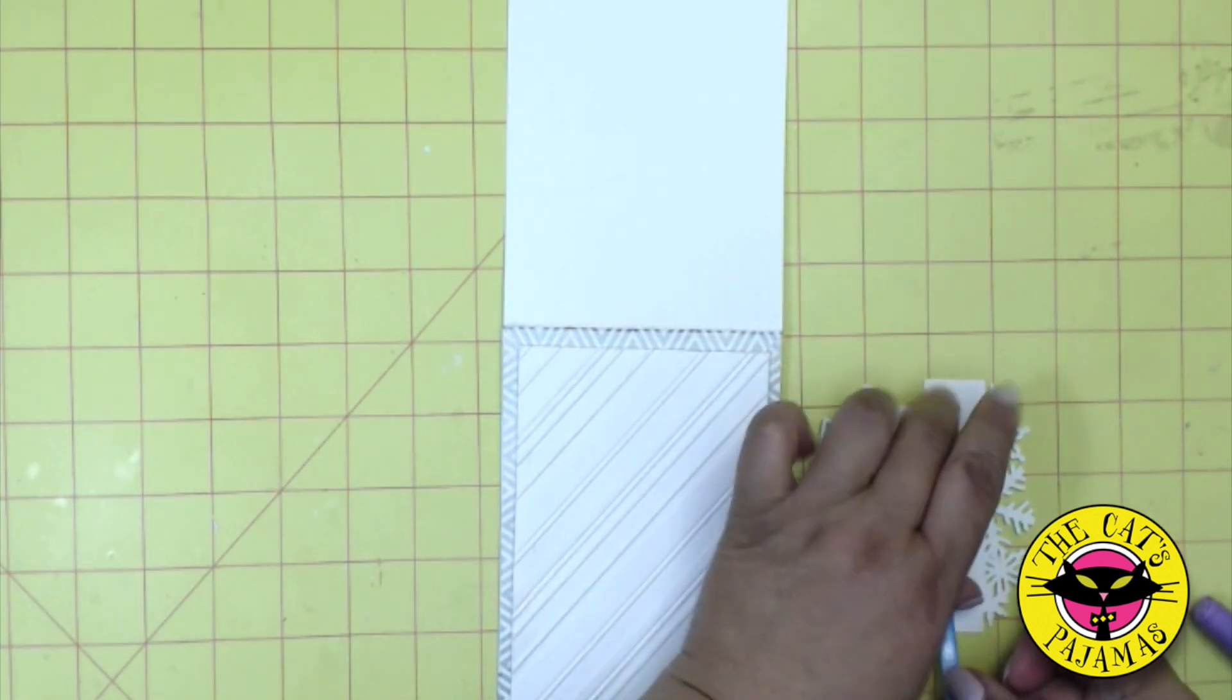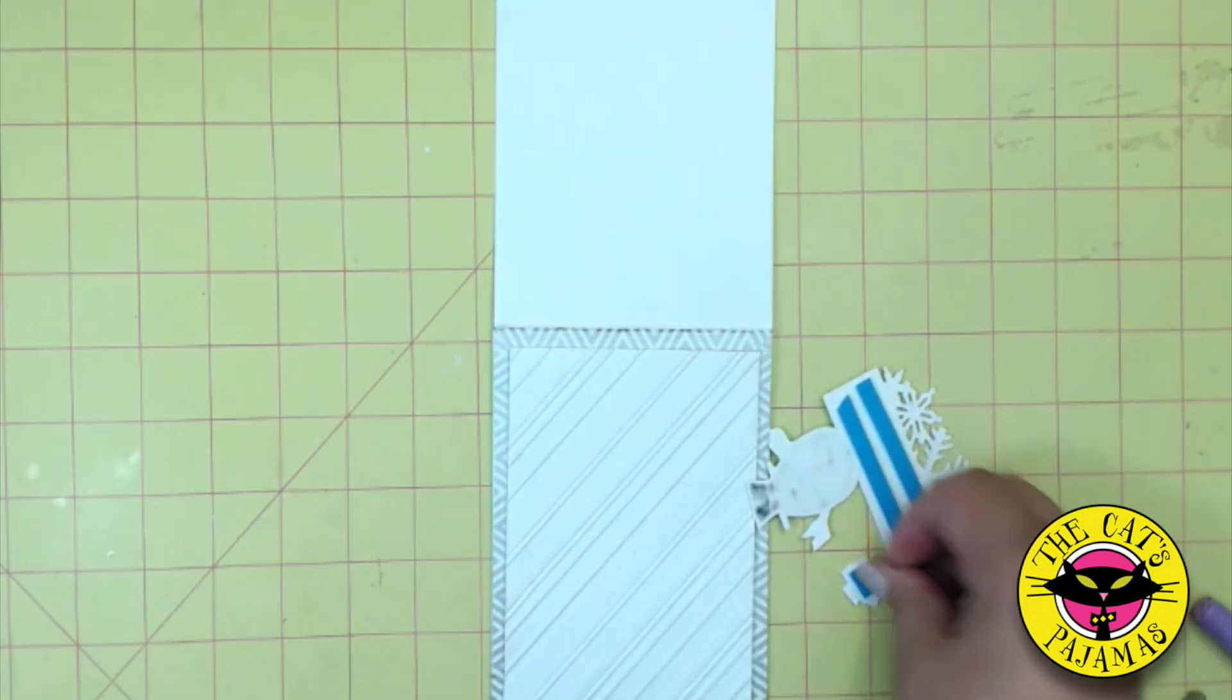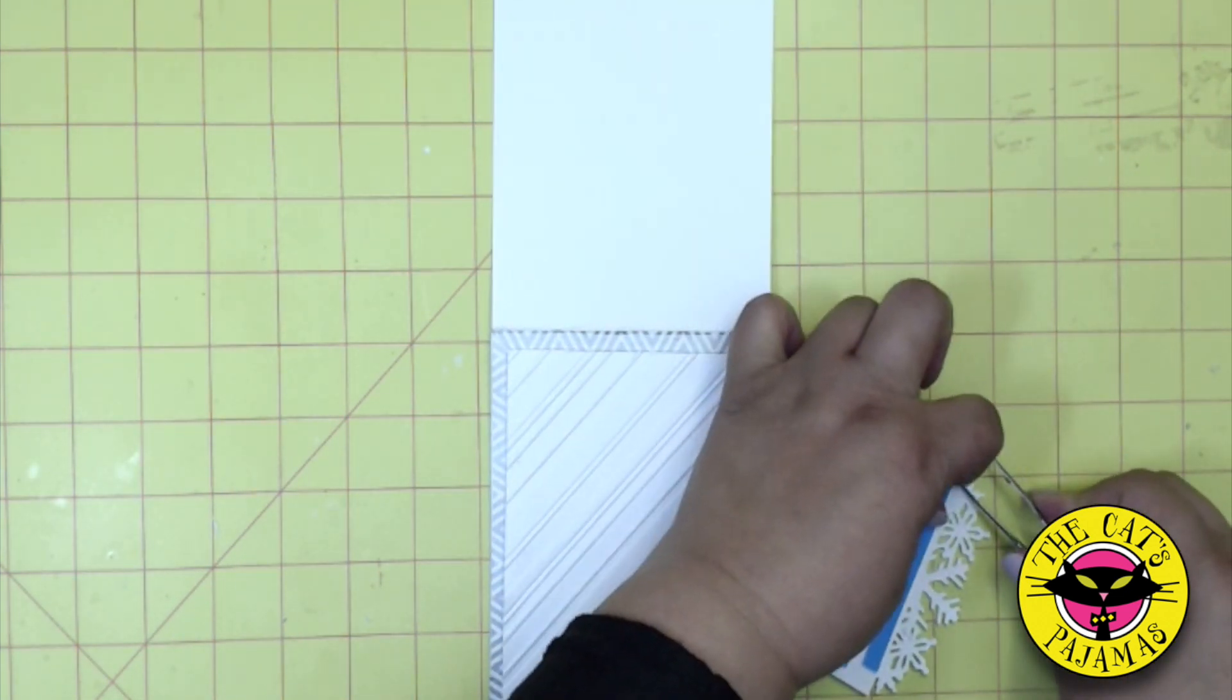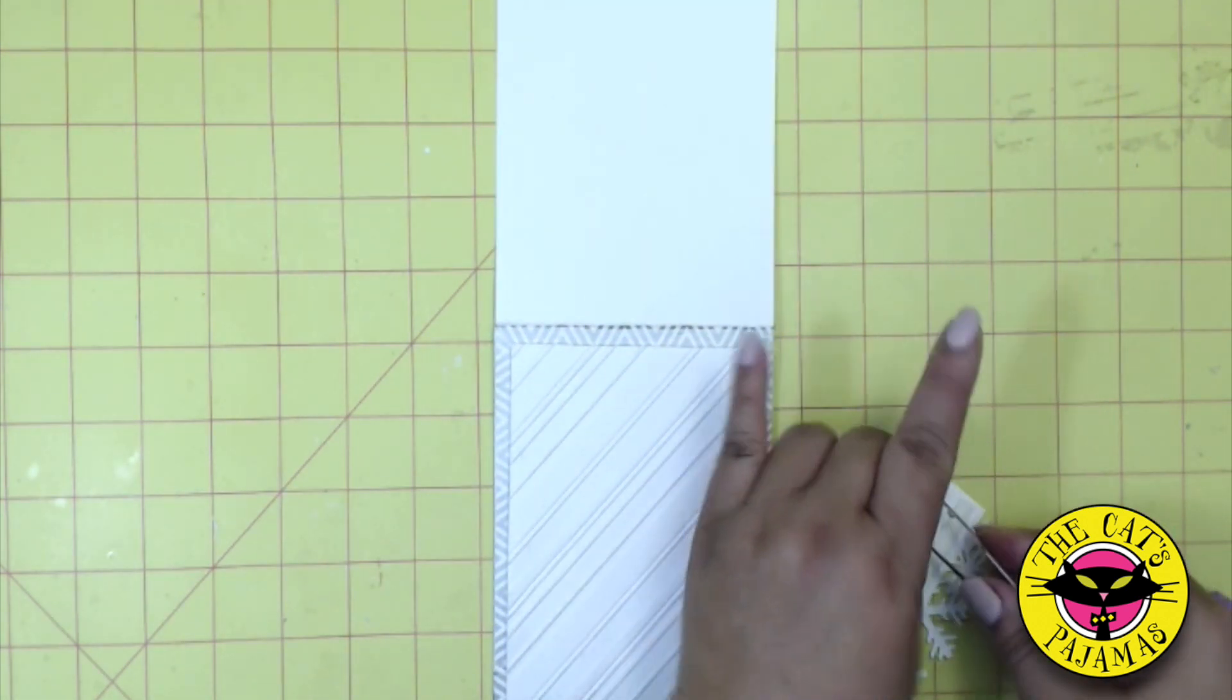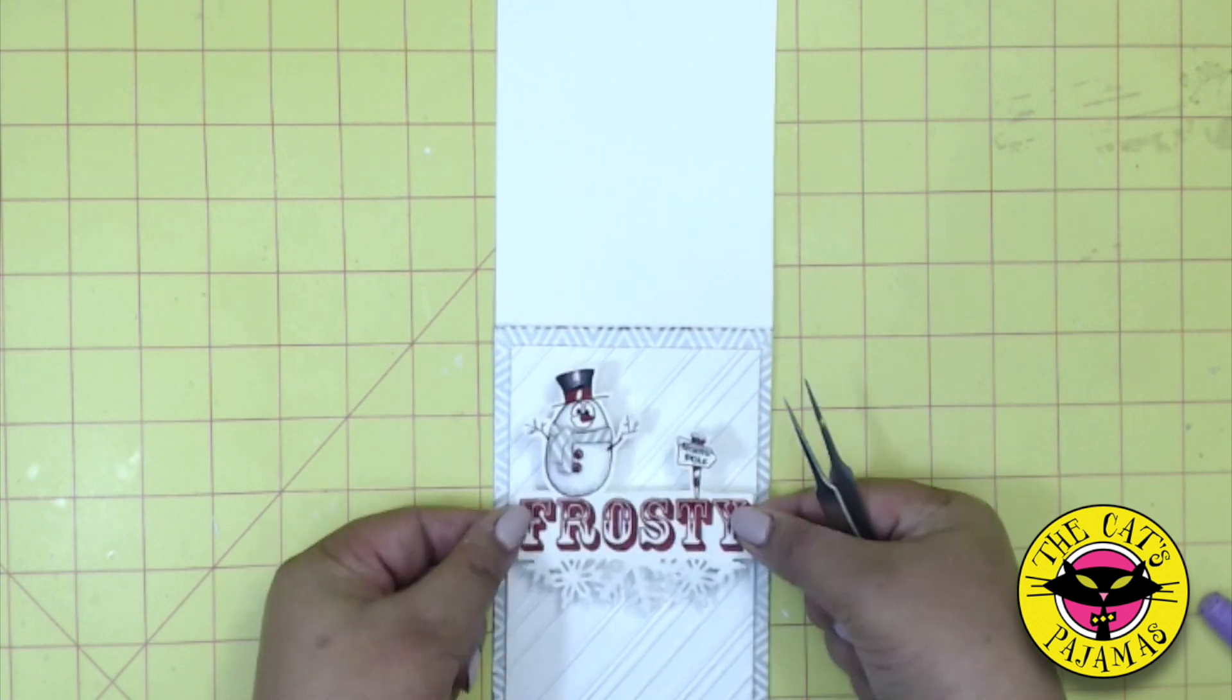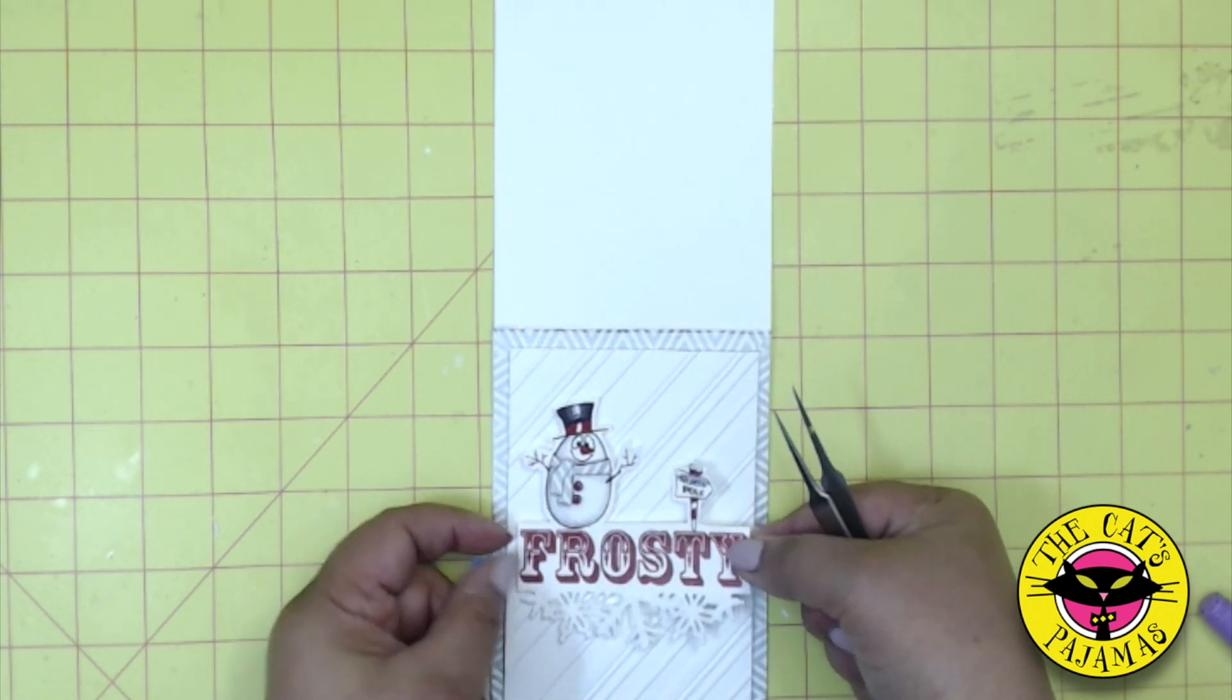And now for the frosty panel. More foam tape. And for the back of the snowman. Where do I put it? This is good. There.